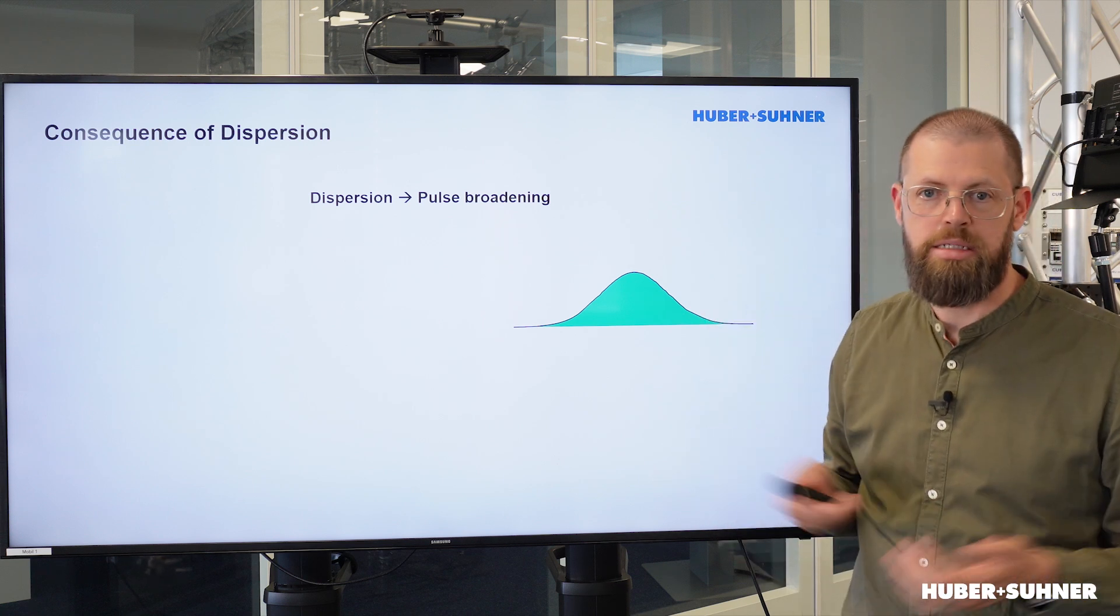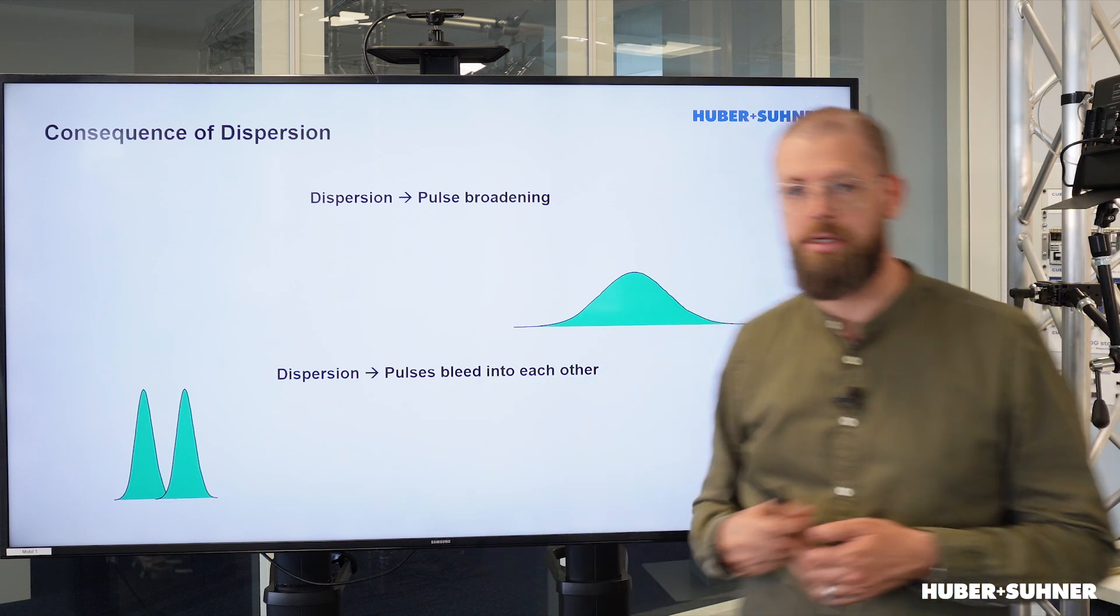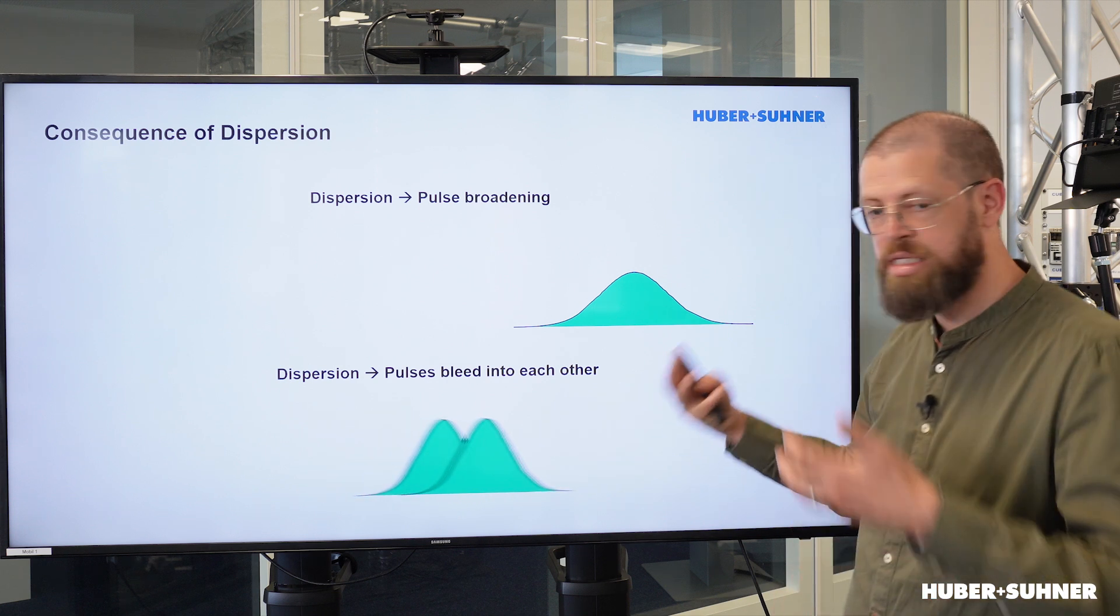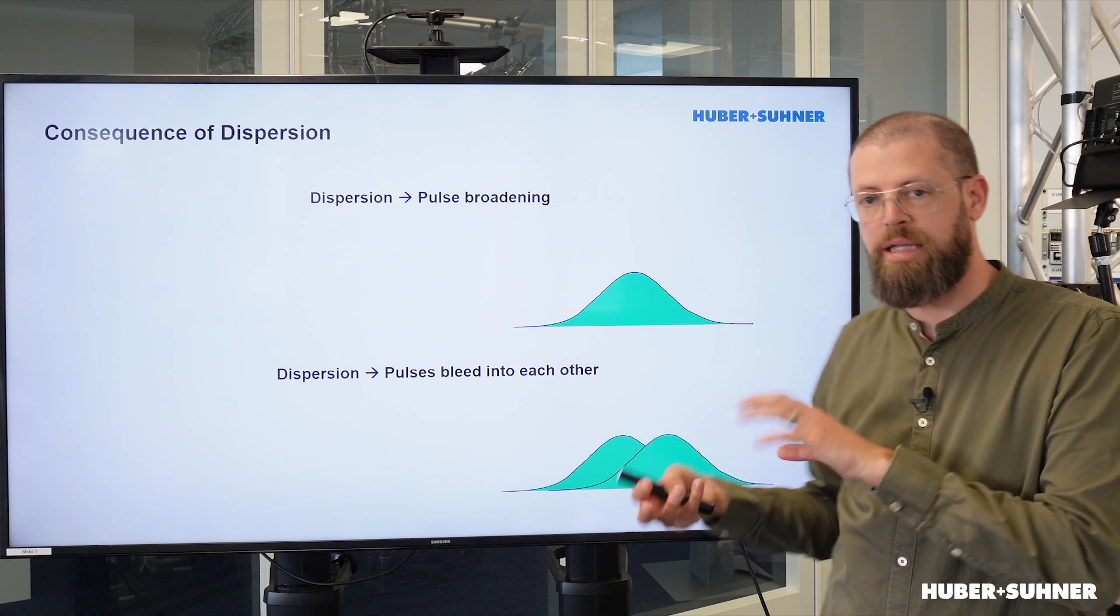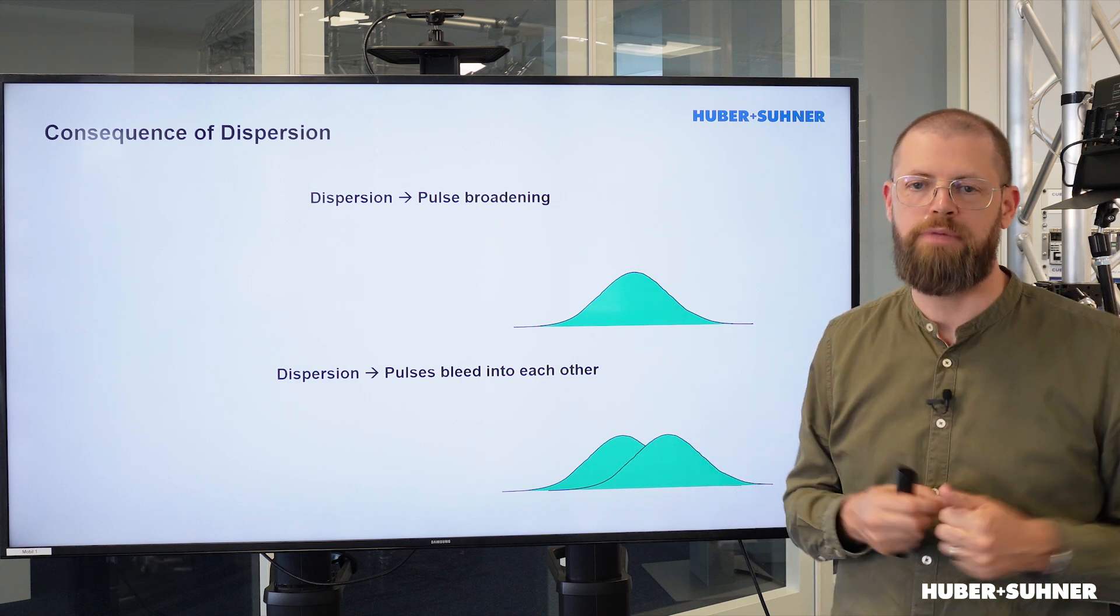With an individual pulse, that isn't really such a big problem. But if we're talking about a sequence of pulses, then you will see that at some point, they actually start bleeding into each other. And that means that the receiver won't be able to distinguish between the individual pulses.